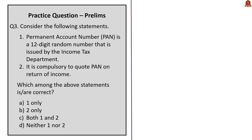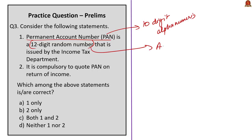The first statement in the PAN question says: 'Permanent Account Number is a 12-digit random number issued by the Income Tax Department.' The association with the Income Tax Department is correct, but PAN is a 10-digit alphanumeric number — not a 12-digit random number. The 12-digit random number is Aadhaar, not PAN, so this statement is wrong. The second statement says: 'It is compulsory to quote PAN on return of income' — during our discussion we saw that PAN was necessary and compulsory for filing the return of income. Now the government has proposed interchangeable use of PAN with Aadhaar, but it has not yet been implemented — so PAN is currently compulsory. Therefore, this statement is correct, and the correct answer is option B: 2 only.